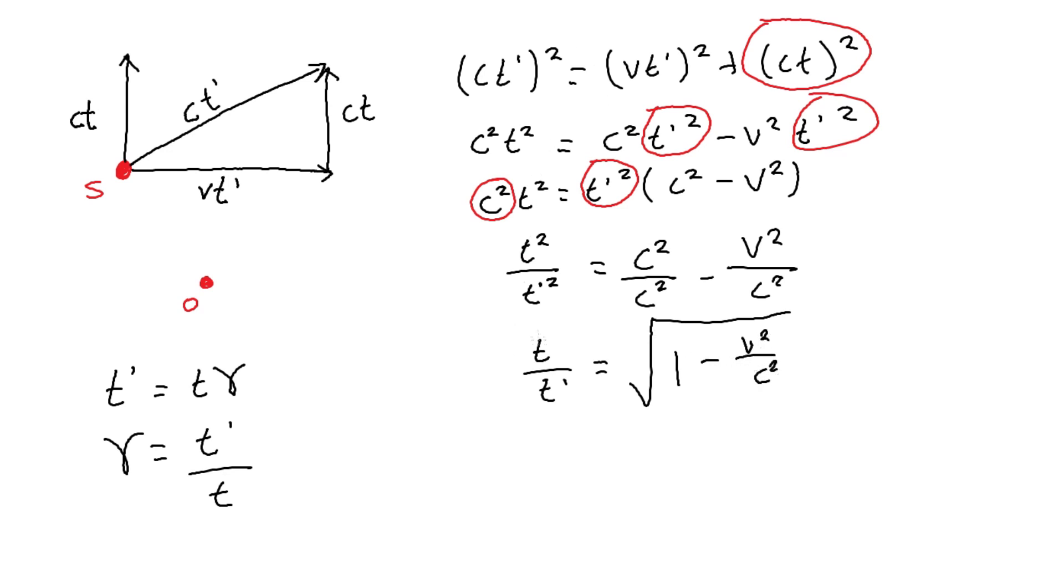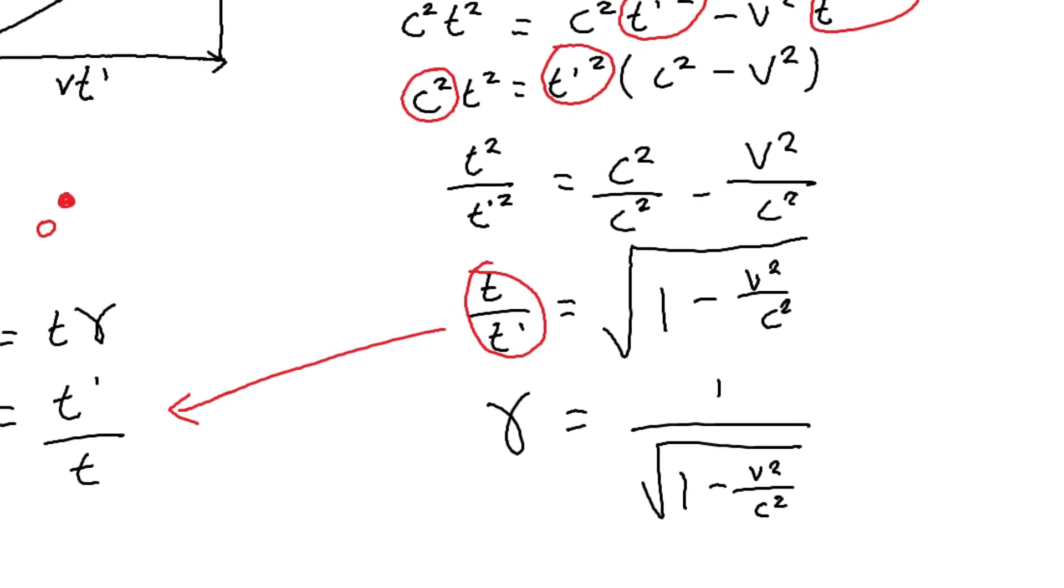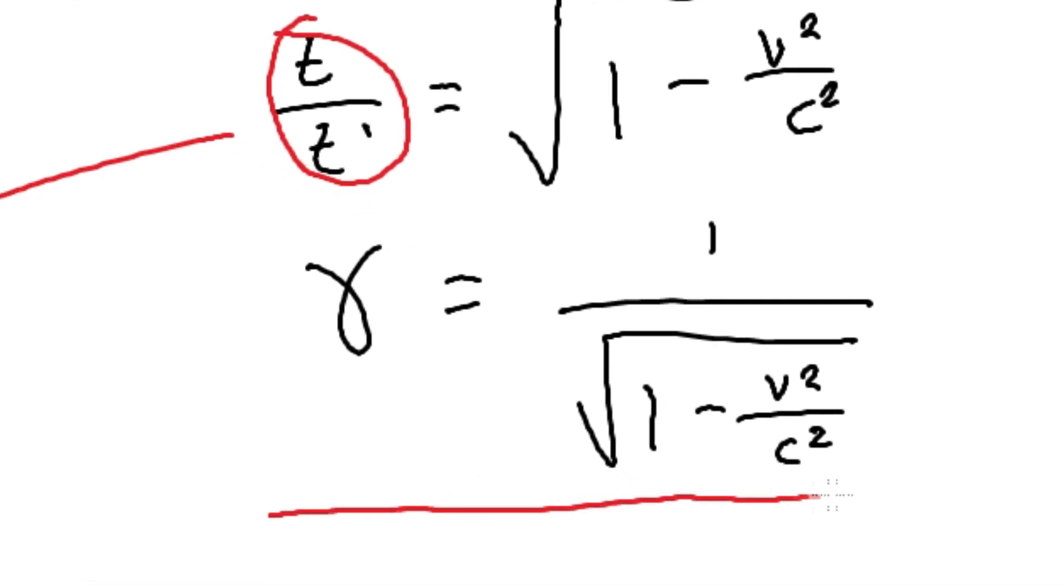Now this expression here should look familiar because it's simply just the reciprocal of this. So if we reciprocate both sides, we get gamma is equal to 1 over square root of 1 minus V squared over C squared. And that is how we arrive at this expression for gamma. Thanks guys.